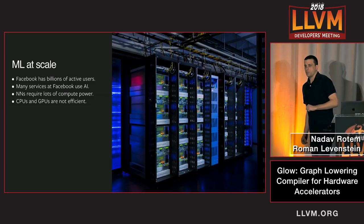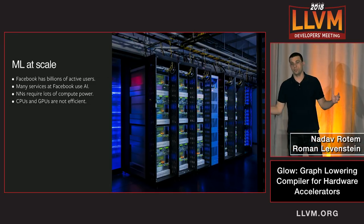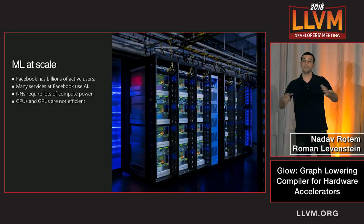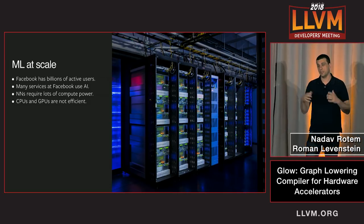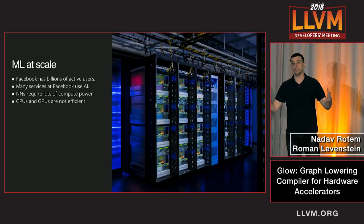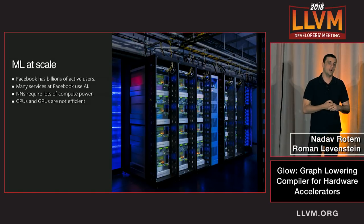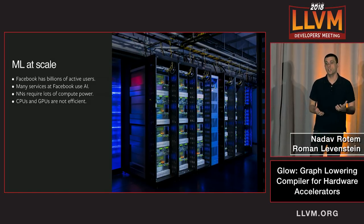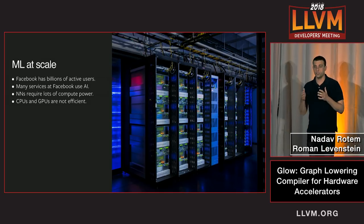At Facebook, we serve billions of users across a bunch of different services, and many of these services use AI. At this scale, when you serve billions of users, you cannot afford to be inefficient. Unfortunately, CPUs and GPUs are not efficient — they're not good at executing neural networks.